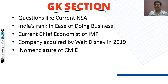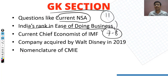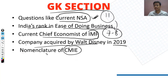For GK, there were 11 straightforward questions. I would say attempt 7 to 8. Questions included India's national security advisor, India's rank in ease of doing business, current chief economist of IMF, the company acquired by Walt Disney in 2019, and CMIE full form from 4 options. If you read any GK or current affairs, these were very basic. Missing them would cost you 7 to 8 marks.